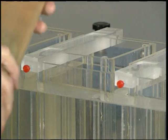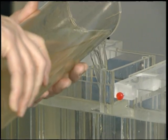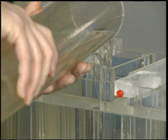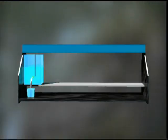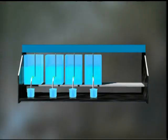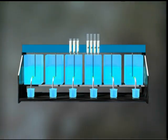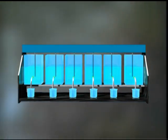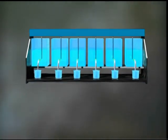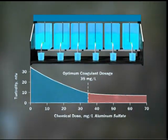By using jar tests, operators are able to experiment with different chemicals and doses. The basic jar test procedure involves collecting a sample of the raw water and adding progressively larger doses of the coagulant chemical to several jars of the sample. The results are used to identify the optimal dose for turbidity removal.